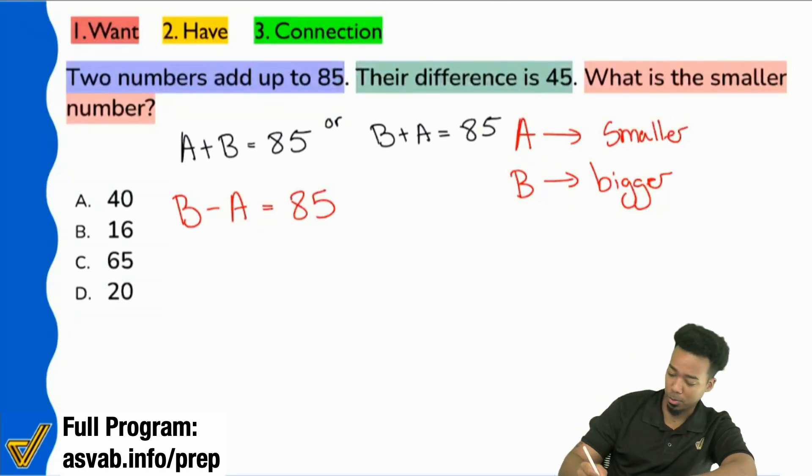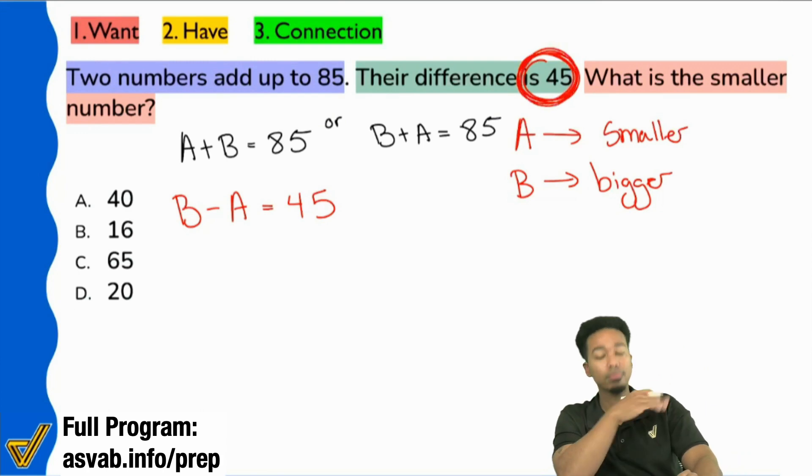Excuse me, let me correct that. That's 45. B minus A is 45.